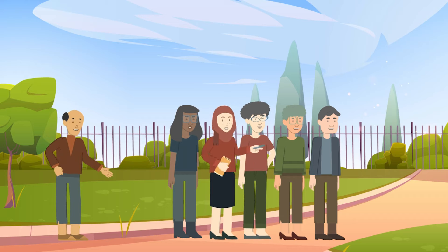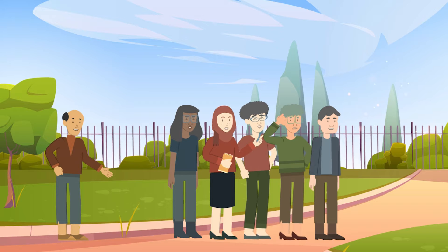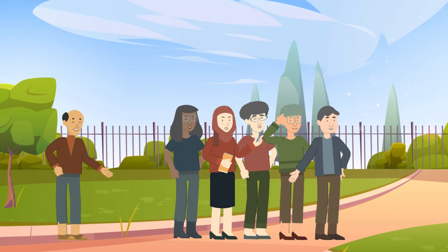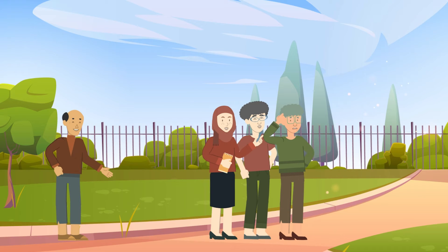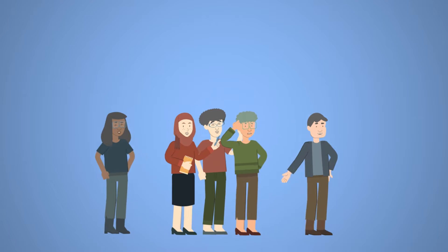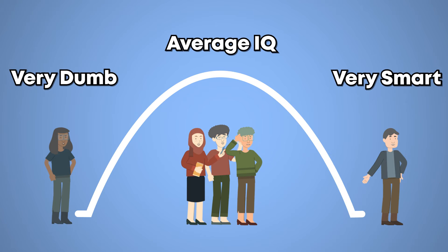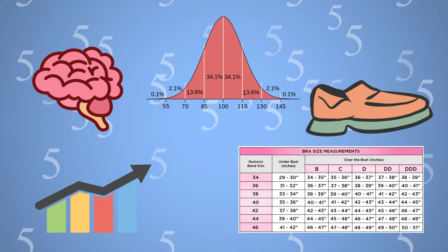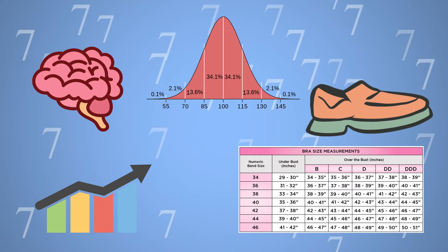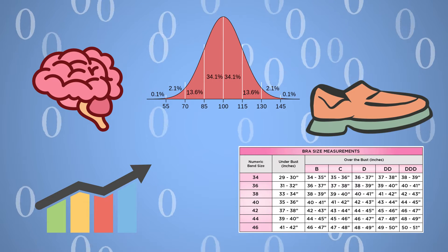We come across this a lot. For example, if you take the IQ scores of everyone in the US, most people will be average IQ, meaning in graphical representation most values will be in the middle. Then at the extremes you will have people who are very smart and very dumb. The same tends to happen when we measure anything from shoe size to height.